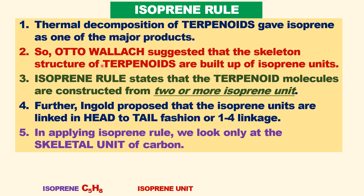Thermal decomposition of terpenoids gave isoprene as one of the major products. Based on this result, it was suggested that the skeleton of terpenoids are built up of isoprene units. The isoprene rule states that terpenoid natural product molecules are constructed from two or more isoprene units.